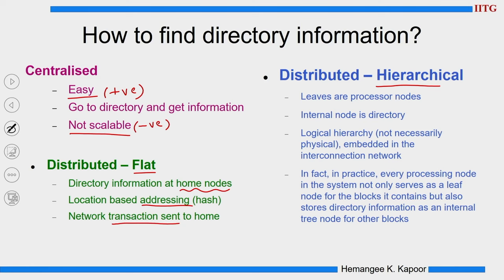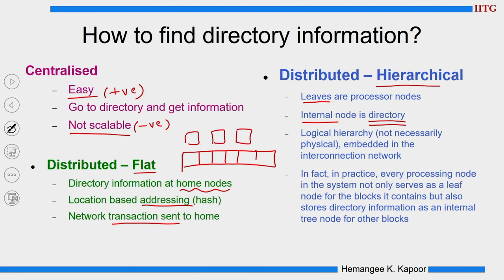In the distributed hierarchical structure, we are building a tree of information. We have leaves of processor nodes and an internal directory. Although it is distributed, it is not a flat directory. When I say flat, the information is in one dimension - a set of locations or bits in a single layer. Whereas hierarchical has a tree-type structure in which information has to be gathered and identified by traversing the tree.